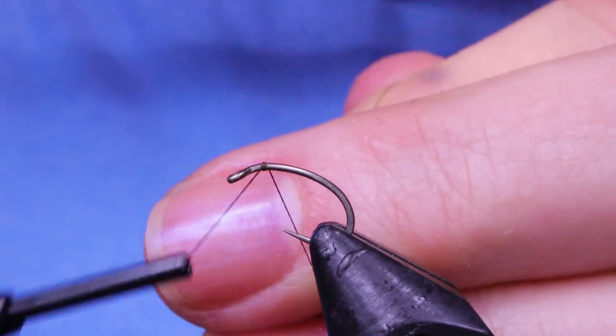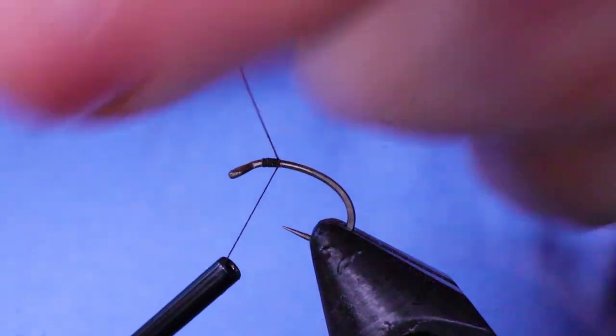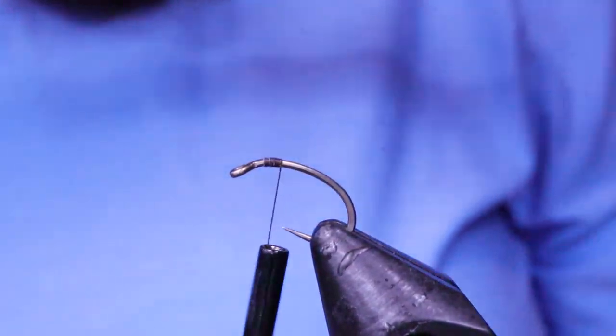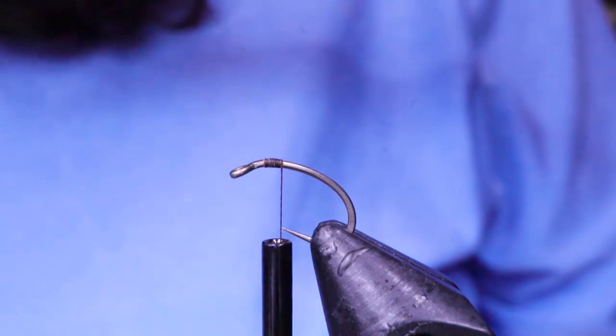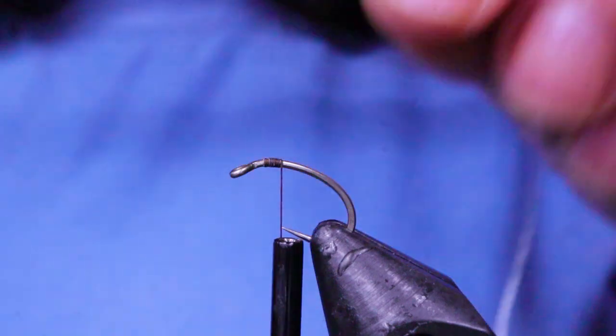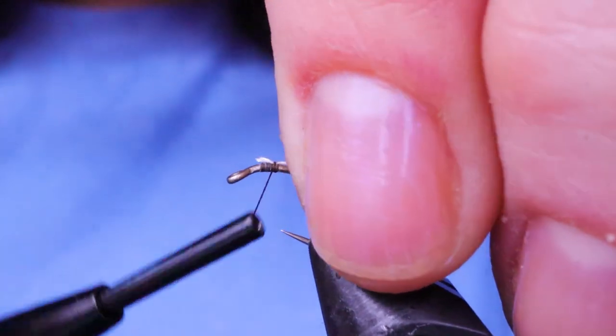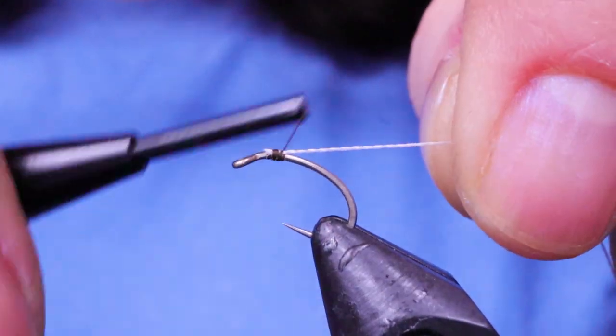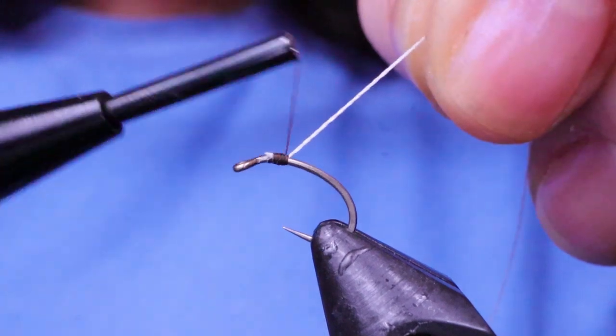Just go ahead and start your thread on the hook with a jam knot. Snap that off. Next take your white ribbing material. I'm using the Floral Bright by Semperfly. If you don't have that, Pat Dorsey just uses white thread, I think he uses 6-0. I'm just trying this out because I have it and it does glow, so I'm curious to see how it does.